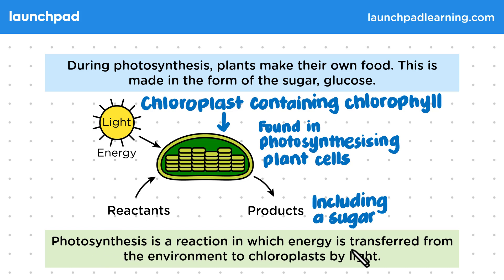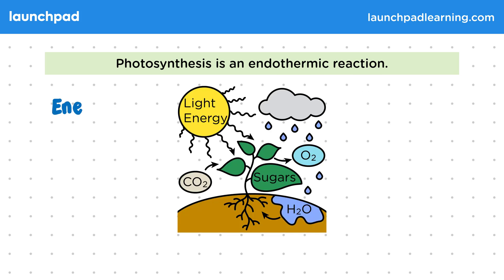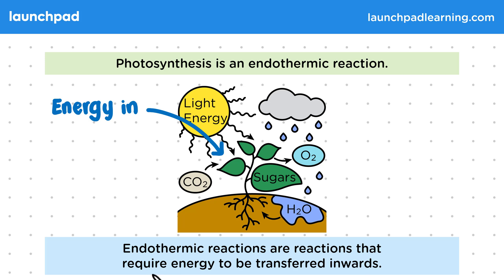Photosynthesis is a reaction in which energy is transferred from the environment to chloroplasts by light. What type of reaction is this if it requires energy to be transferred in? Photosynthesis is an endothermic reaction. This process requires light energy to be transferred in to produce the sugars. Endothermic reactions are reactions that require energy to be transferred inwards. You should be able to describe photosynthesis as an endothermic reaction in which energy is transferred from the environment by light.